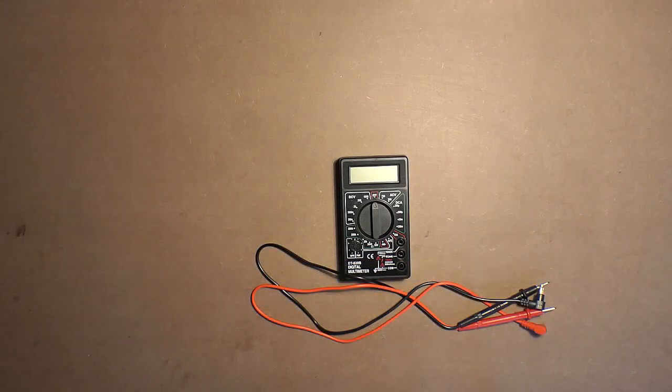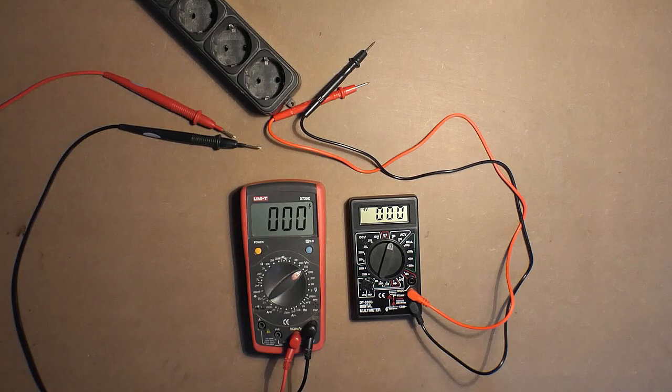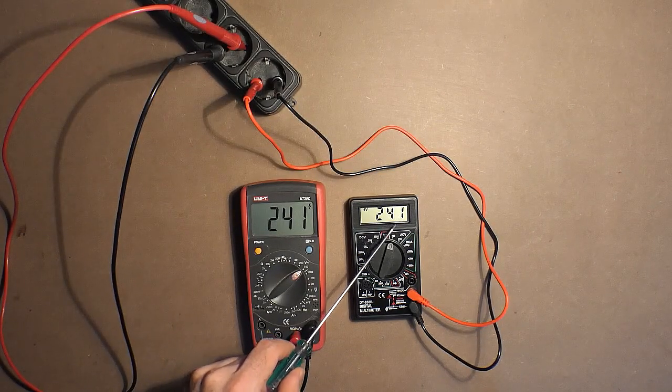In our test we will compare this device to the Unity multimeter UT39C. First of all, let's start with the mains voltage: 241, 240, 242, 241.